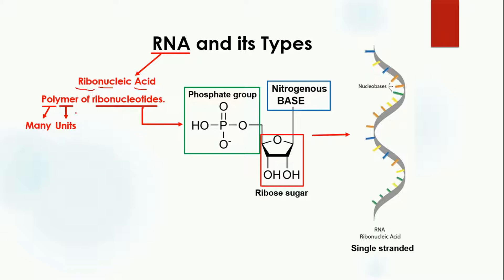The question is: what actually is a ribonucleotide? A ribonucleotide is a compound made up of a phosphate group, ribose sugar, and a nitrogenous base. These three components join with each other to form one molecule of ribonucleotide, and in RNA, many ribonucleotides combine with each other.